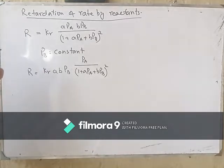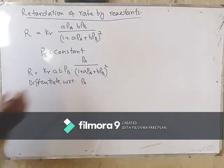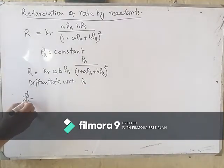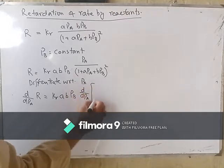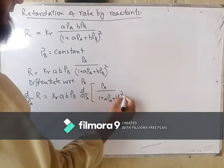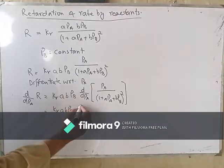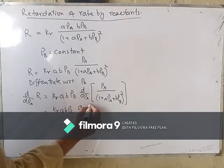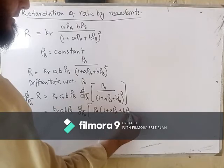Now we differentiate to show the variation of rate with respect to pressure of A. We get dR/dPA equal to KR·KA·KB·PB times d/dPA of PA divided by (1 + KA·PA + KB·PB) squared.